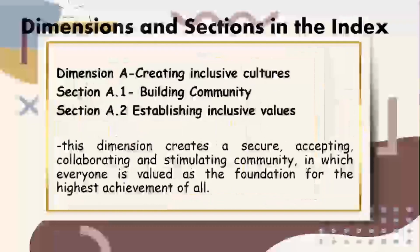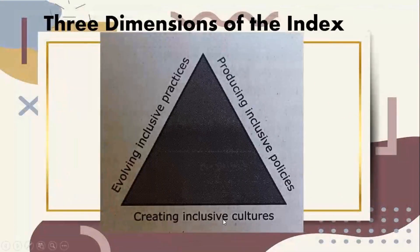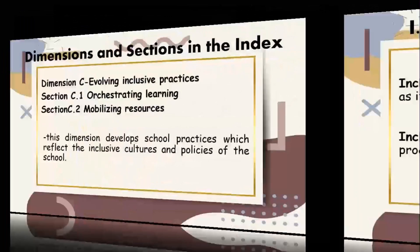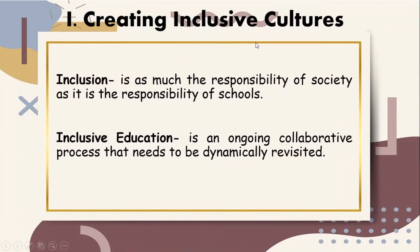Those are the three dimensions: creating inclusive cultures, evolving inclusive practices, and producing inclusive policies. Inclusion is as much the responsibility of society as it is the responsibility of the schools. From the previous chapter, we realize that the key to successful inclusive practices is the merging of frameworks and aligning of definitions of disability. In this discussion, we shall learn that inclusive education is an ongoing collaborative process that needs to be dynamically revisited.